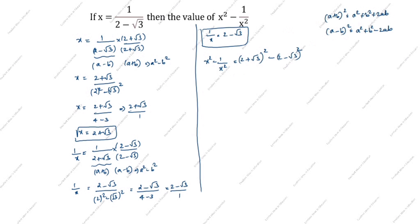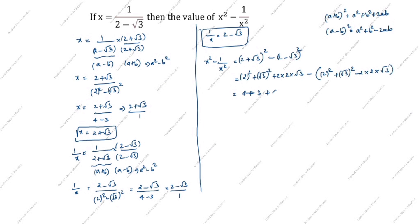We expand x squared as 2 plus root 3 whole squared: a is 2, b is root 3, giving 2 squared plus root 3 squared plus 2 into 2 into root 3. For 1 by x squared, that is 2 minus root 3 whole squared: 2 squared plus root 3 squared minus 2 into 2 into root 3. This gives 4 plus 3 plus 4 root 3 for the first part, and 4 plus 3 minus 4 root 3 for the second.